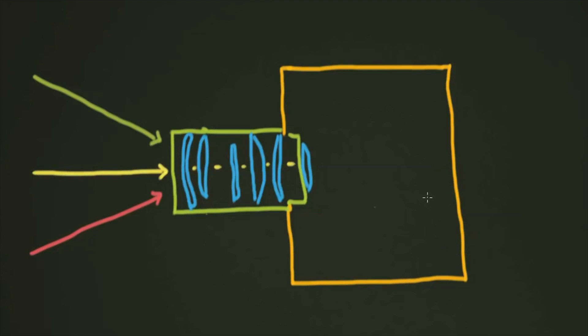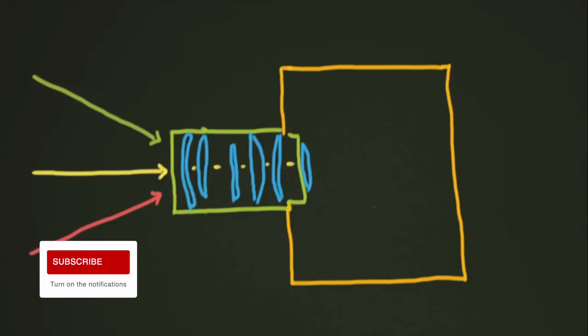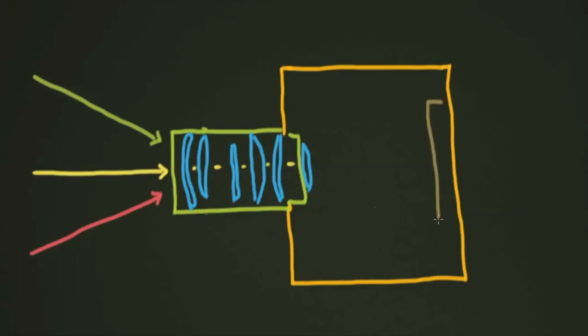some people figured out that there were light sensitive chemicals. And so at some point, someone came up with the idea of making film. So film was produced, and we are going to make our film brown. And it was put in the back of the room, or in the back of the box, the back of the camera. So here is our film. And this is basically, early on it would have been glass or some piece of metal, covered and coated in some sort of light sensitive silver nitrate of some kind.